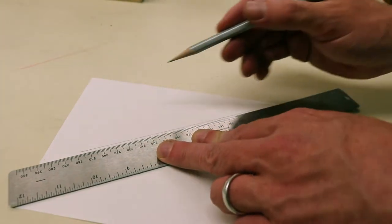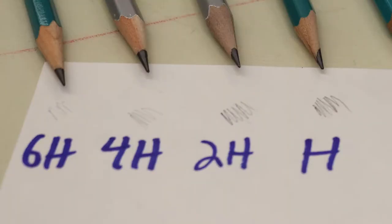If you're drawing sharp technical lines, you'll want to use the H pencil. H is the least hard graphite and 6H is the hardest. 6H is actually pretty hard to see because the graphite is so dense.